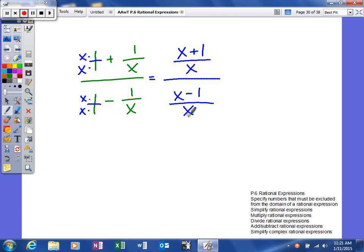Now we've accomplished our first goal. We've got one term on the top and one term on the bottom. What we're going to do next is instead of trying to divide, we're going to multiply by the reciprocal. The numerator will stay the same, x plus one over x, and now we're going to multiply by the reciprocal.